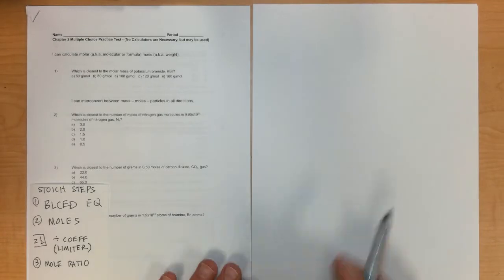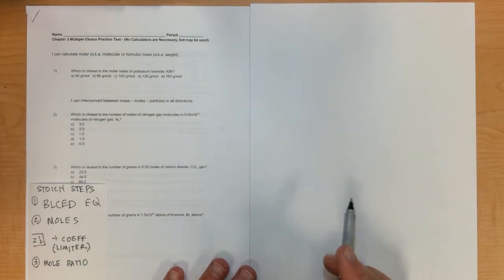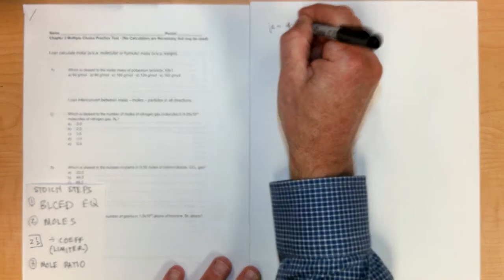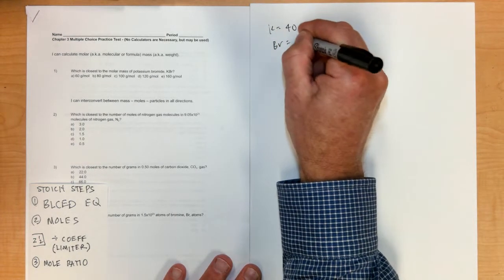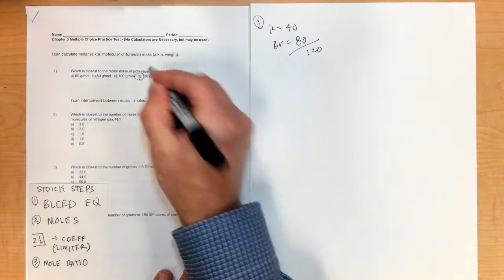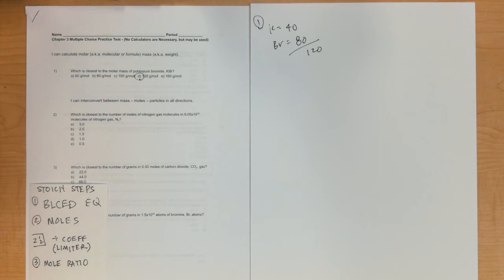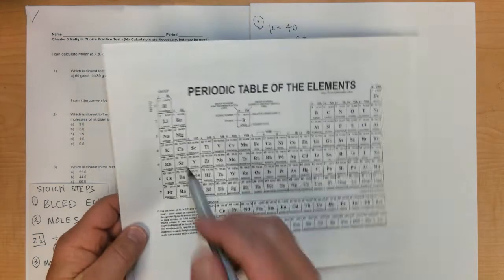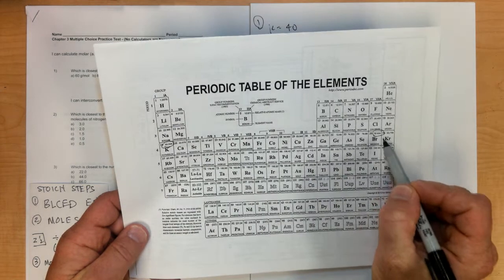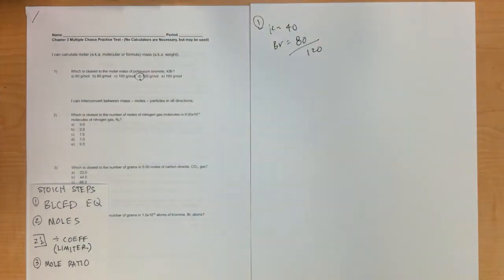Problem number one: which is closest to the molar mass of potassium bromide? You need a periodic table. Potassium is about 40, and bromine is about 80, so that's about 120, which would be letter D. Potassium right here is 39, bromine is 80. You add those two together to get the molar mass.